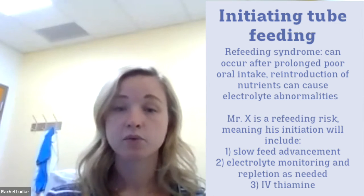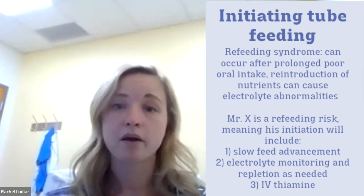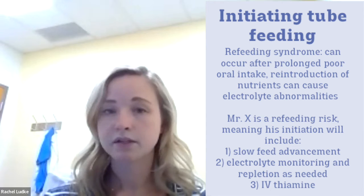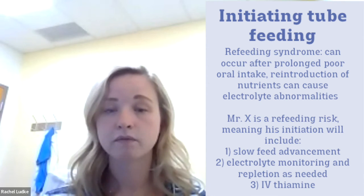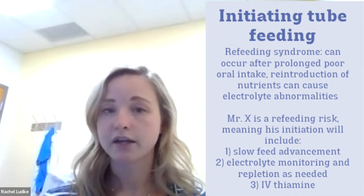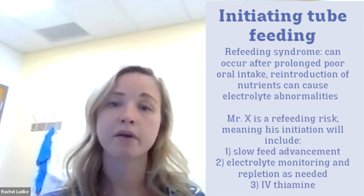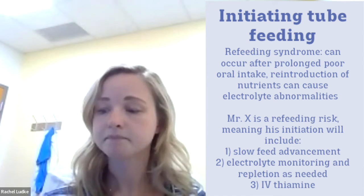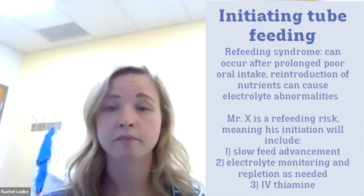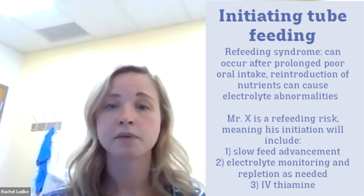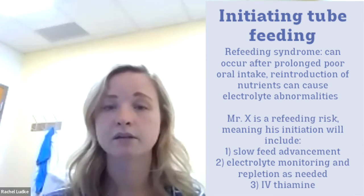Given Mr. X has been really struggling with his intake for greater than about four days, we're going to consider him a refeeding risk. With that, we're going to take our time to slowly advance our tube feeding over the course of about two to three days. We're going to check his phosphorus, potassium, and magnesium levels about every 12 to 24 hours and replete those electrolytes as we see the levels come back. Lastly, we're going to provide Mr. X with about a hundred milligrams of IV thiamine a day. That's because patients become thiamine deficient when they're in refeeding syndrome because thiamine is a cofactor in a lot of the metabolic processes.